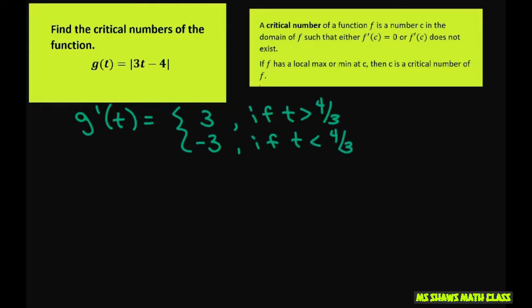So therefore g'(t) does not exist, but there is a critical number at t = 4/3.